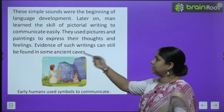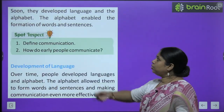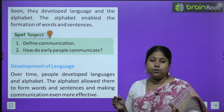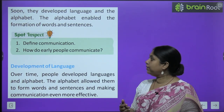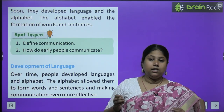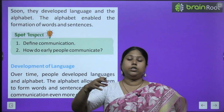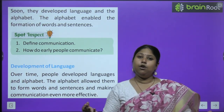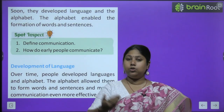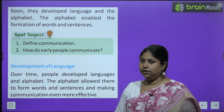Evidence of such writings can still be found in some ancient caves. Soon they developed language and alphabet — dheere dheere signs and symbols gave way to languages and alphabets. The alphabet enabled the formation of words and sentences. Jab dheere dheere chhote chhote akshar bane, phir aksharon se shabd bane, shabd se vaakye bane.